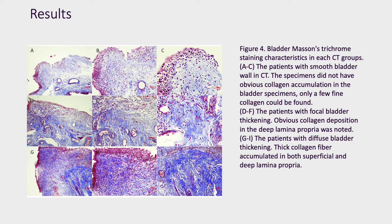Figures 4A to 4C showed that patients with smooth bladder wall had hardly any obvious collagen accumulation in the bladder specimens. In contrast, Figures 4D to 4F showed that patients with focal bladder wall thickening had thicker collagen fiber deposition in both superficial and deep lamina propria.